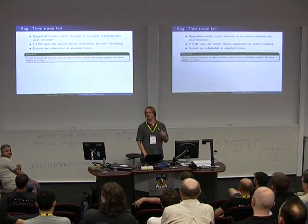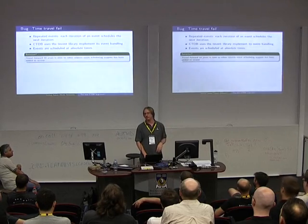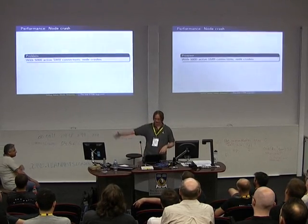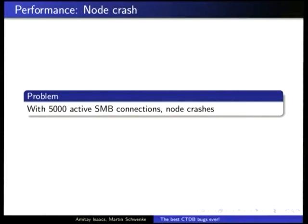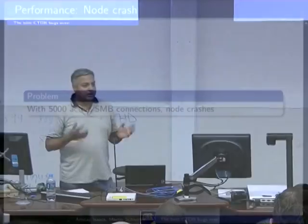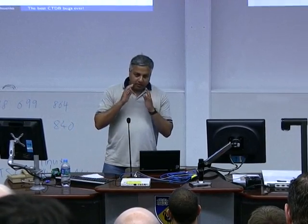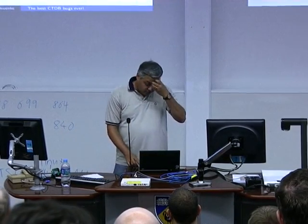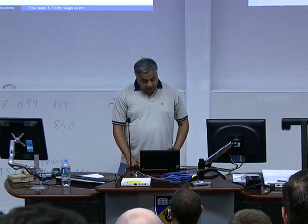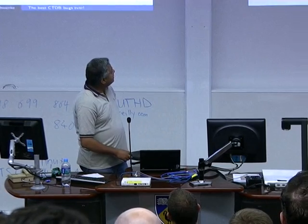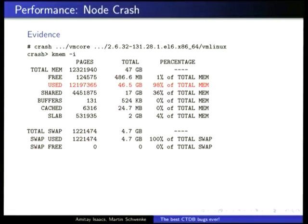Back to performance. Once we fixed some small issues, we really started stress testing the box with 5,000 active SMB connections. What happened? As soon as it reached about 5,000, the node completely crashed. We captured the crash dump and started looking at it. One thing we discovered: it's using all its RAM — it's invoking out of memory and somehow it's not able to recover. The kernel is not able to recover and it just crashes.